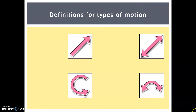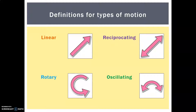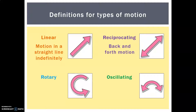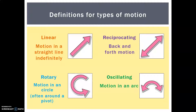Now let's get to the four types of motion. The first is linear, the second is reciprocating, the third is rotary, and the fourth is oscillating. Linear is motion in a straight line, in theory indefinitely. Reciprocating is a back and forth motion — a lot of students get these confused. If something is going in one direction it could stop and turn around, but it won't go back and forth continuously. Rotary is motion in a circle, often around a central pivot point like a doorknob. Oscillating is motion in an arc.